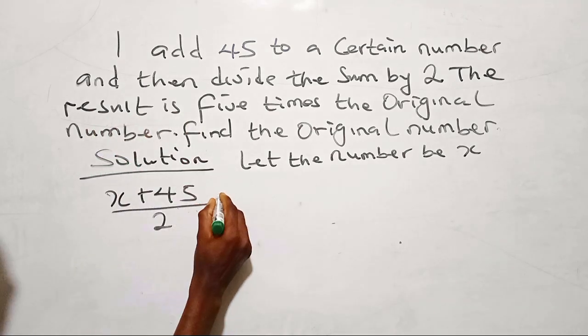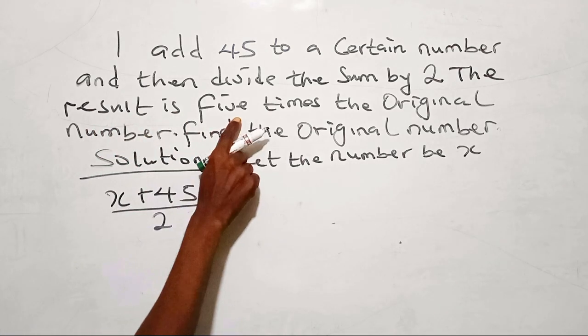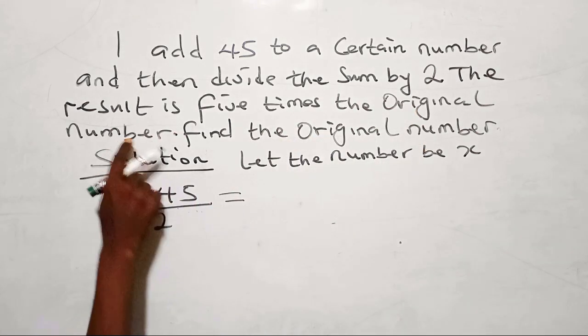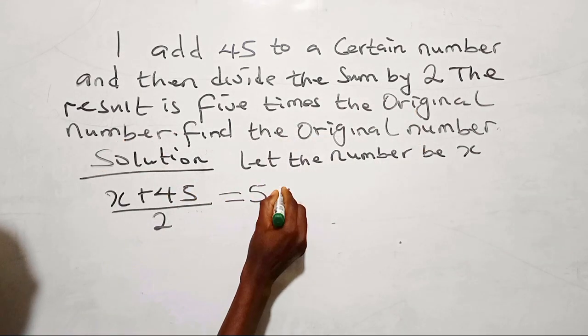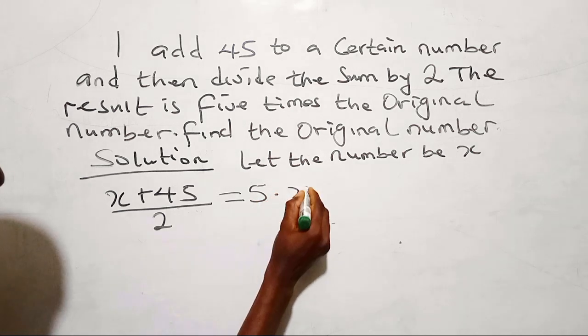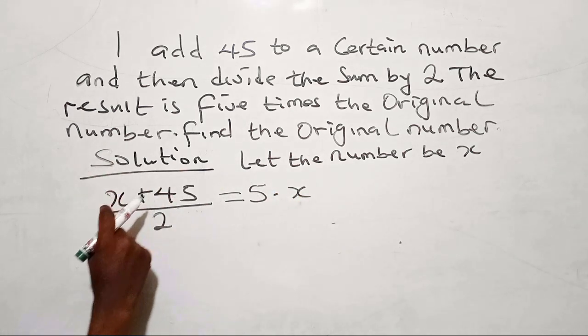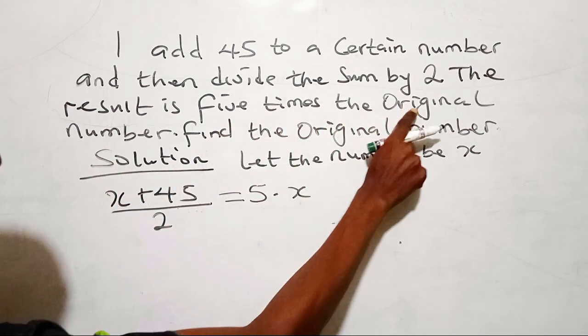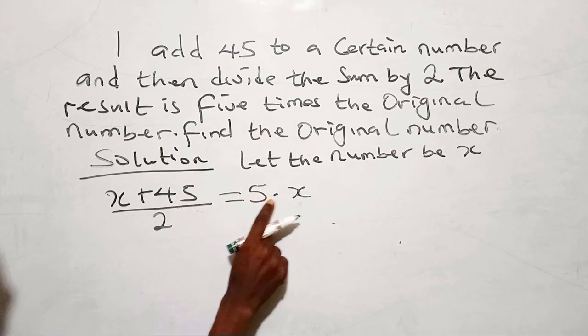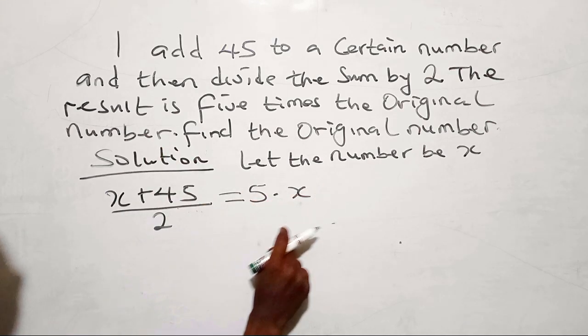The result is equals 5 times the original number. The original number is x. 5 times the original number, that is 5 times x, which is written as 5x.